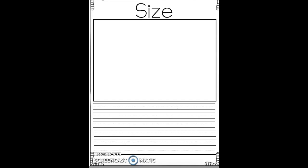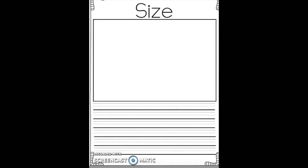Next up is information about the size of your animal — how big or how small it is. You can compare your animal with another object, or you can write the size using meters or whatever measurement you find on the internet. Here you're going to write 'My animal measures,' or for example, 'The Asian elephant measures...'